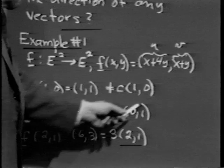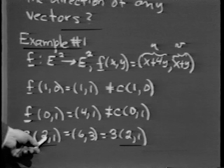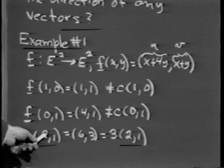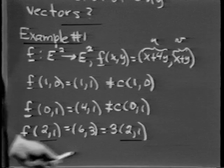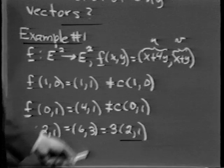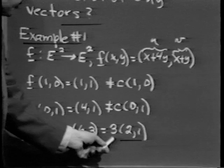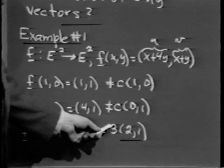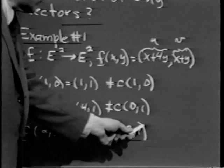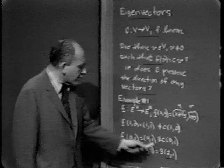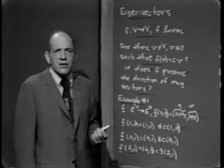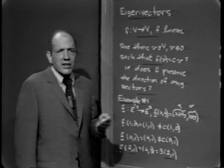On the other hand, let's take the vector 2i + j, i.e., the two-tuple (2, 1). When x = 2 and y = 1, x + 4y = 6 and x + y = 3. So f-bar maps (2, 1) into (6, 3), which is 3 times (2, 1). In other words, the vector 2i + j is mapped into the vector with the same direction as 2i + j but three times as long. So sometimes a linear transformation will map a vector into a scalar multiple of itself; sometimes it won't.